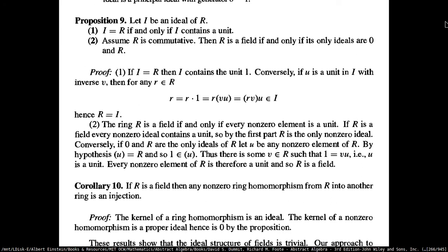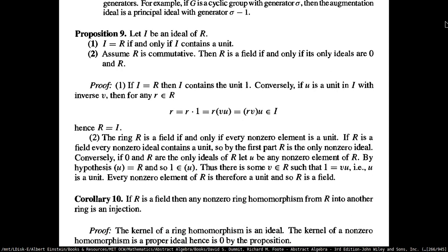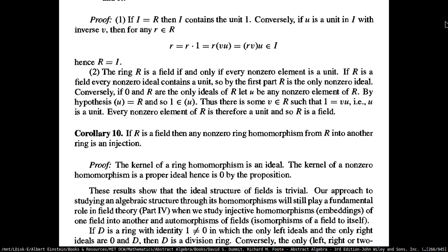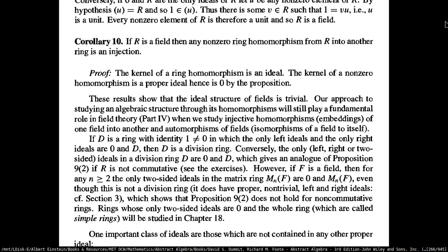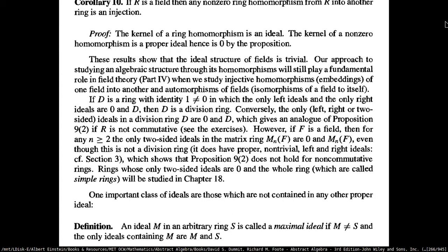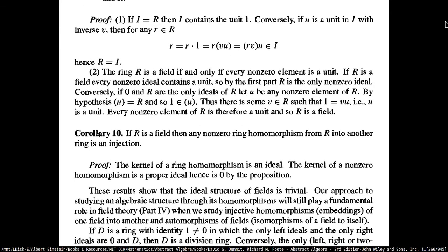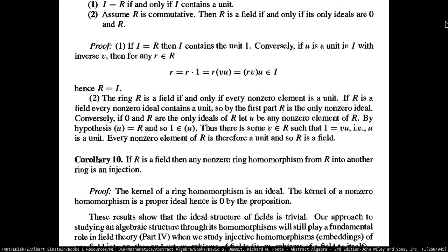And thus it's going to be zero, because the proposition says R is a field if and only if the only ideal is zero. This kind of gives an idea about how fields work — how fields are pretty much rings with commutativity and you just have the special ideals and nothing else. It's a very special case of rings, which we're going to see in field theory.